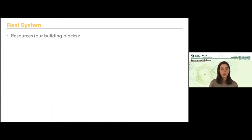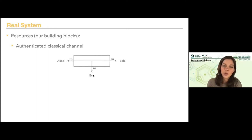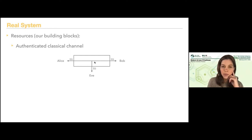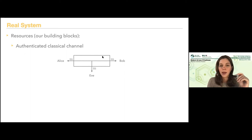Now let's move to the real system. Our resources — the building blocks for the protocol — are: an authenticated classical channel. I can send classical messages M from Alice to Bob in both directions. It's a public channel, so Eve can learn the message — she hears what it is — but she cannot change it. Alice and Bob can still communicate knowing the message came from one another. This is the authenticated channel.